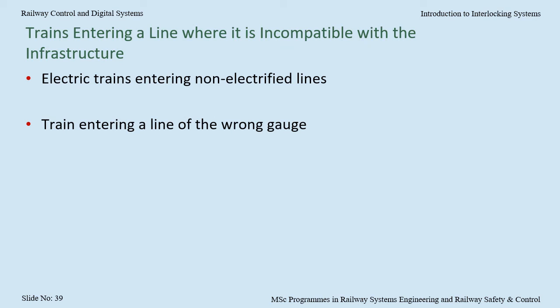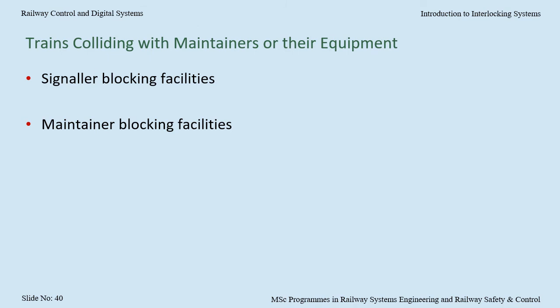Now let's consider the risk of trains entering a line where it is incompatible with the infrastructure. There are many types of incompatibilities, and only some of these are addressed in the interlocking. For instance, the interlocking could be configured to prevent electric trains from entering non-electrified lines. Or, in dual gauge areas, the interlocking would need to be configured to prevent a train of one gauge entering a line that is of the other gauge. Now let's consider the risk of trains colliding with maintainers or their equipment. The signaller will be provided with the ability to prevent movement authorities from being issued as a reminder that maintainers are in that area, and this functionality may be included in the interlocking.